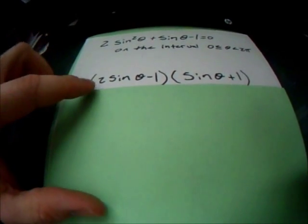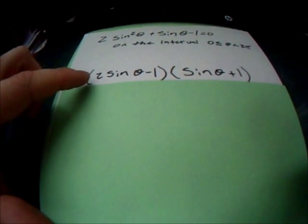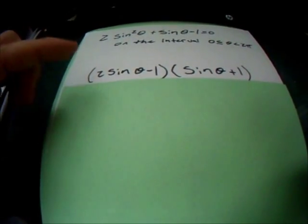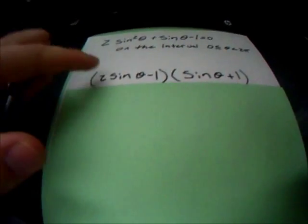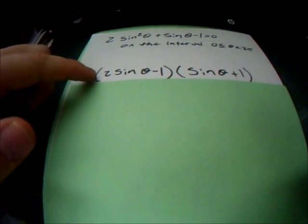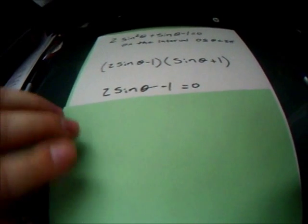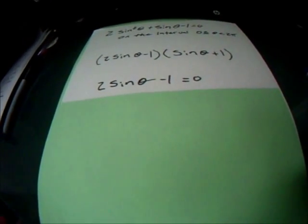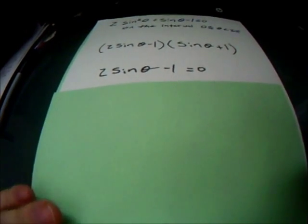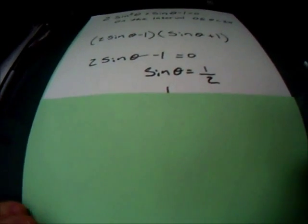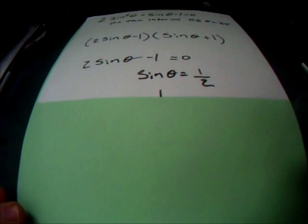What we can do from here is set both sides equal to 0 and then solve. So we're going to work with this first one here and set that side equal to 0. So you get 2 sine theta minus 1 equal to 0. We're going to solve that, so you get sine theta is equal to 1 half.